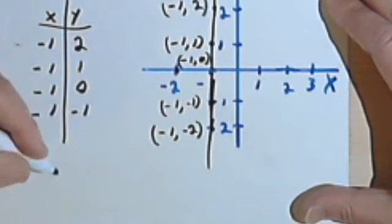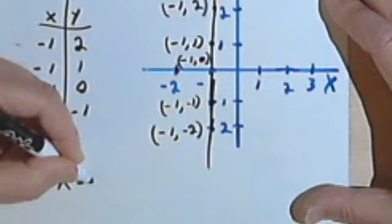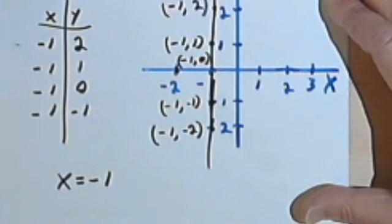So if x is always negative 1, what I can say in terms of an equation is x equals negative 1.